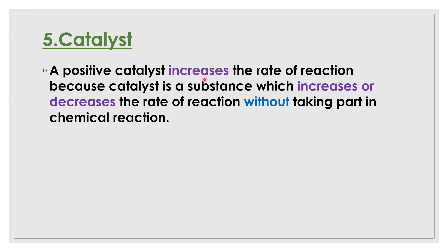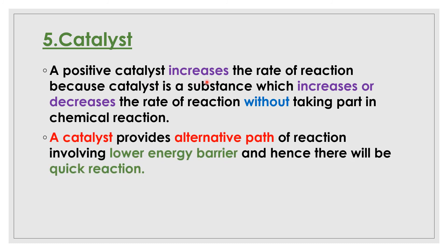The last factor is catalyst. A positive catalyst increases the rate of reaction. A catalyst is a substance which increases or decreases the rate of reaction without itself taking part in the reaction. The role of a catalyst is based on the path of the reaction — it provides an alternative path involving lower energy barriers. The energy barrier is reduced, allowing the reaction to proceed more quickly.